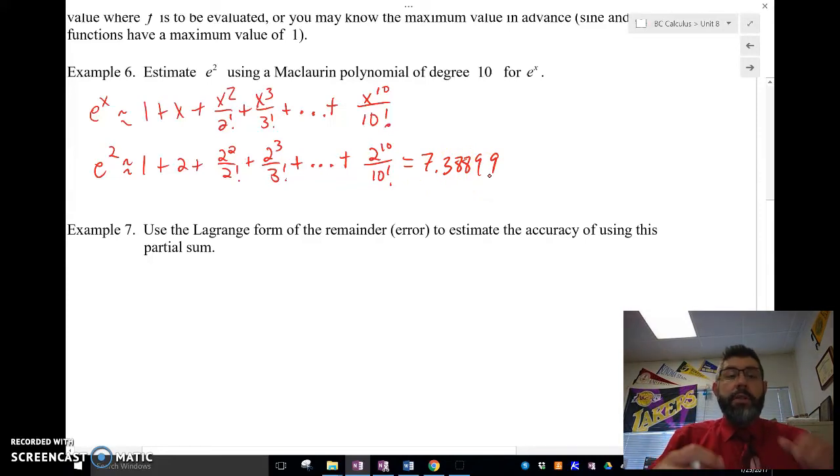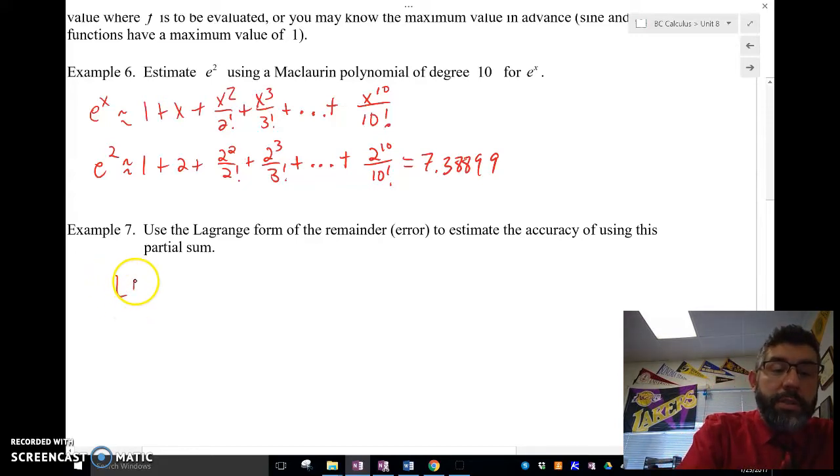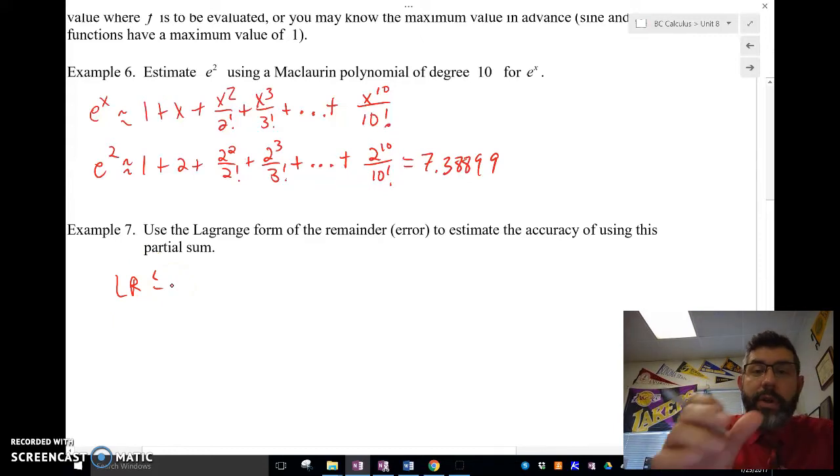Now, what we're going to do is, notice here, this is not an alternating series, so we're going to use a Lagrange form of the remainder to estimate the accuracy of using this partial sum. So, we're going to need the 11th term. We're going to use the Lagrange, and the Lagrange is going to be the derivative.